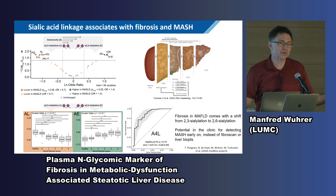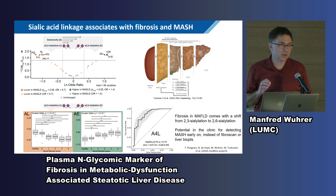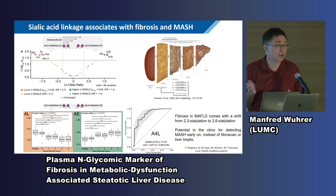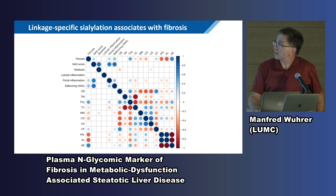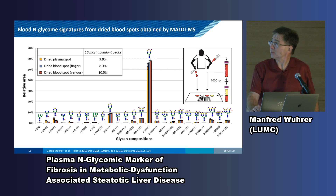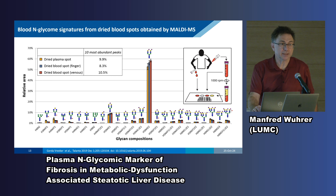We are now recruiting additional replication cohorts to see whether this is really a promising marker, which hopefully will allow us to replace liver biopsies and help do liver health assessments more broadly — maybe at the general practitioner — because now liver health is not or poorly assessed. Our glycomic markers quite nicely, positively or negatively, associate with fibrosis as assessed by the pathologist from liver puncture and biopsy. The nice thing is that you can do this from a single droplet of blood, getting the very same glycan signatures.